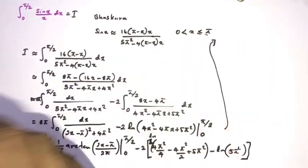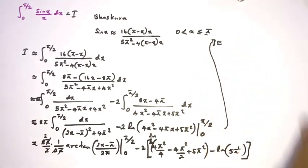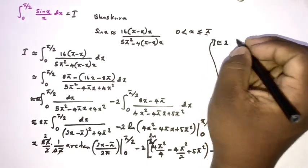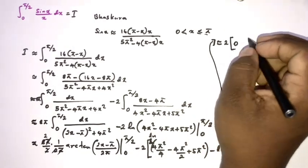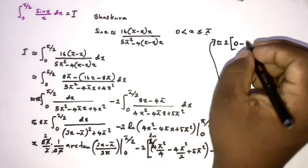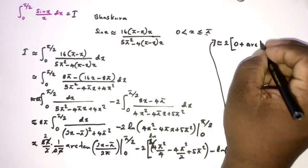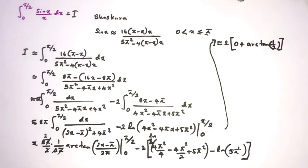So I is approximately equal to: two times zero from the arctan upper bound, since π/2 − π/2 = 0. Then minus, from the lower bound, −π/2 over π gives minus one-half. The minus sign brings it in front of arctan, giving plus arctan(1/2).